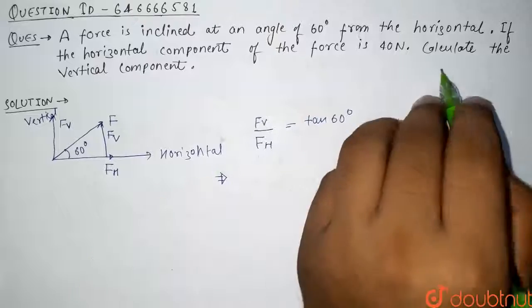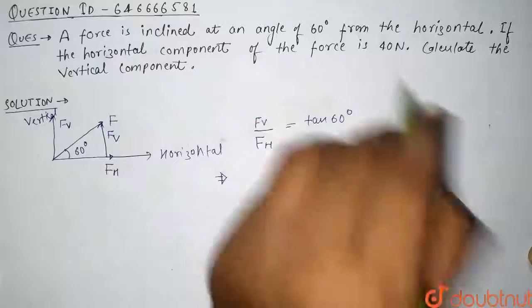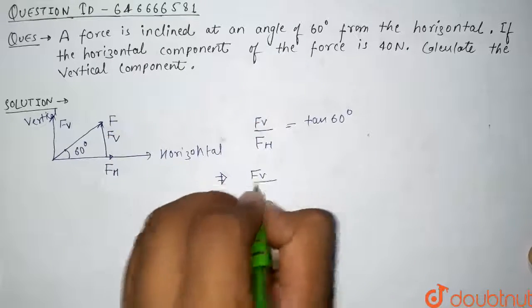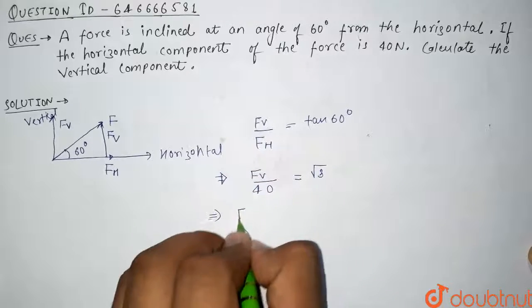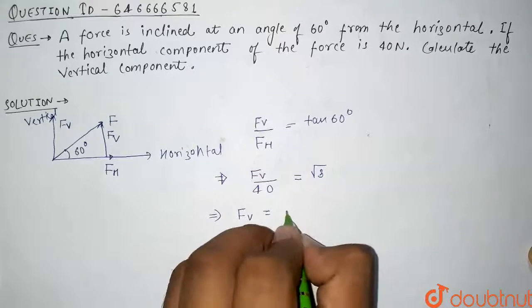So from here, we have been given the horizontal component of force, that is 40, and we know that tan 60 is basically equals to root 3.